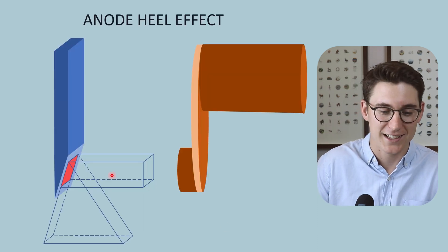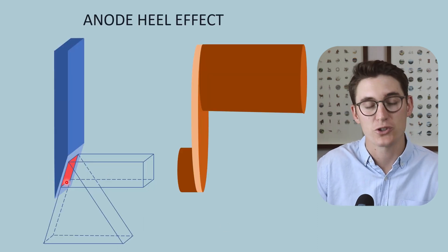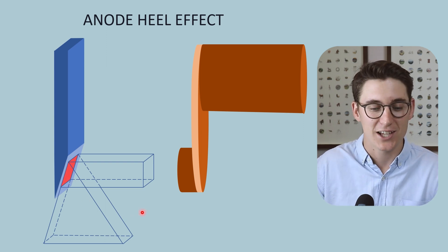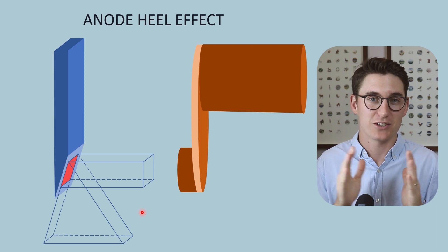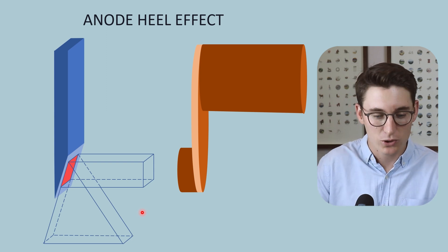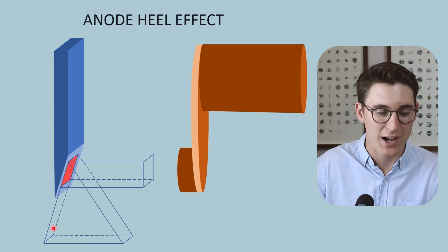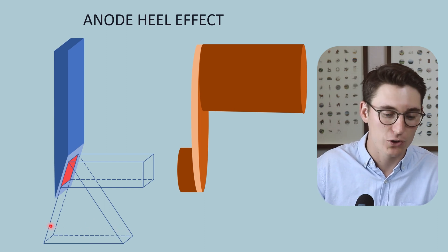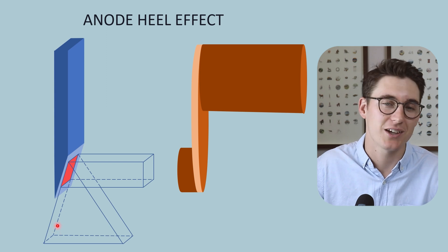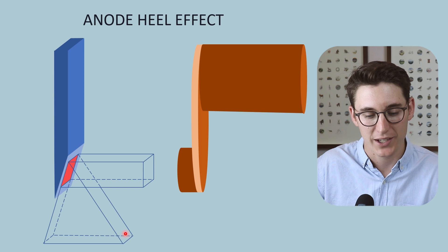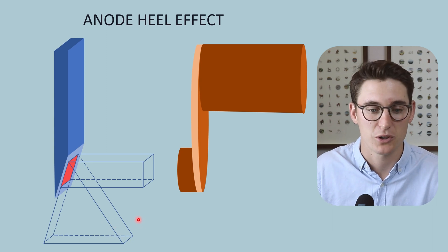Now in the last talk we looked at the focal spot and we saw that reducing the anode angle reduced our field size as well as reduced our effective focal spot size. We also saw that our effective focal spot size actually changes throughout our field. The closer we get to the anode side we get a smaller effective focal spot and as we move out towards our cathode side we get a bigger effective focal spot.